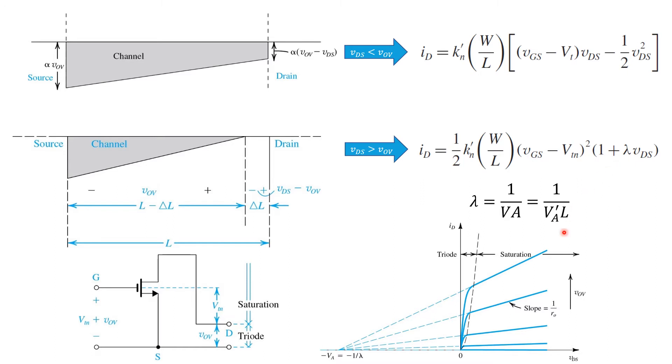So on our plot of ID versus VDS for a fixed gate source voltage, whereas until now we'd assumed that the drain current remains constant in saturation, in fact, what we see is that the drain current continues to increase with a finite slope. The parameter that determines that slope in saturation is lambda, this constant of proportionality between VDS and the regular square law current.